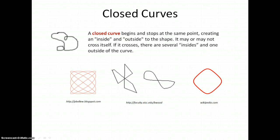One type of curve is called closed. A closed curve begins and stops at the same point. It always has an inside and an outside. If it crosses itself, it may have several insides, but only one outside the curve. It may not cross itself, and then it has one inside and one outside.